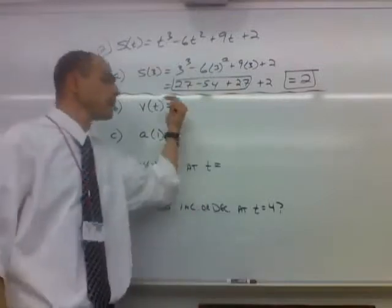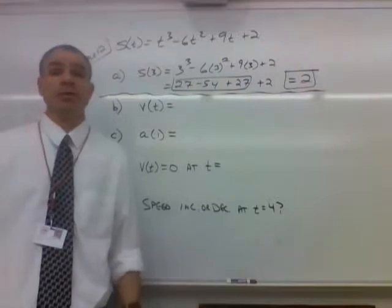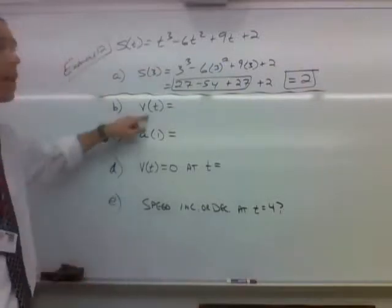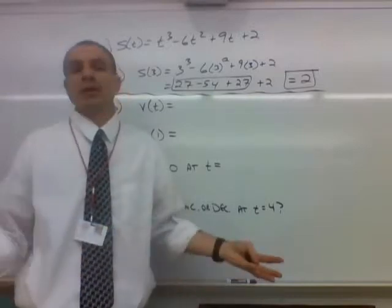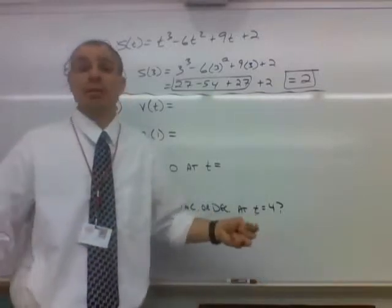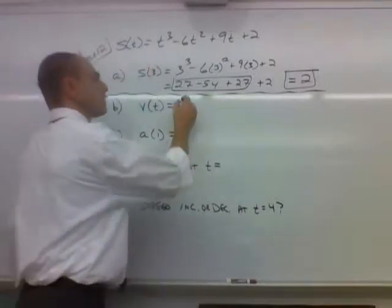Part B asks, what's the instantaneous velocity at any time t of this particle? Well, this object's velocity, we know that velocity is the derivative of position. So all we've got to do here is just take the derivative of our position function. So the derivative of t cubed would be 3t squared.